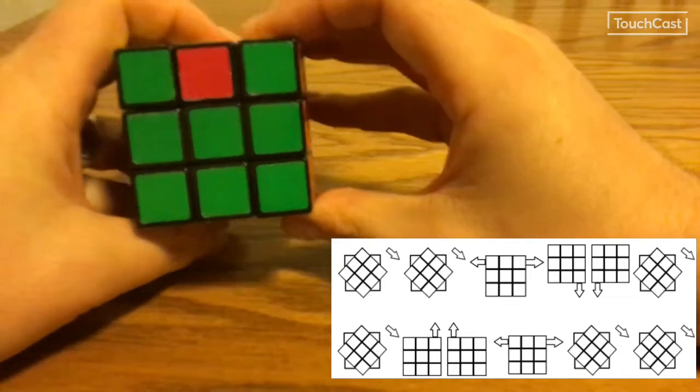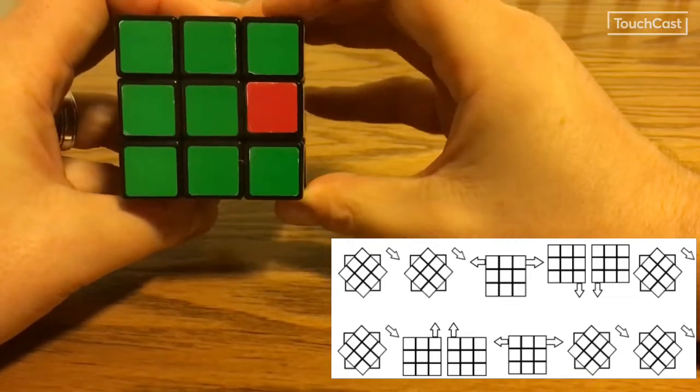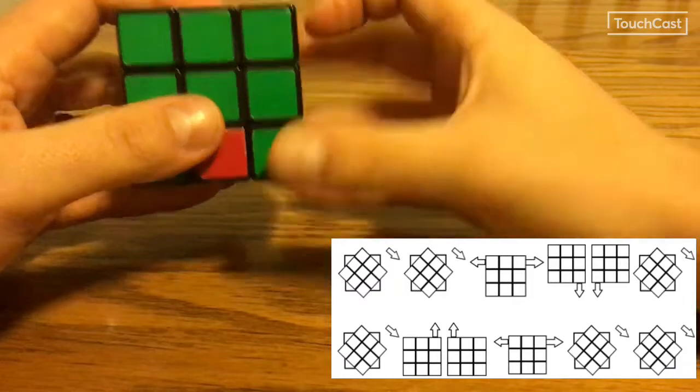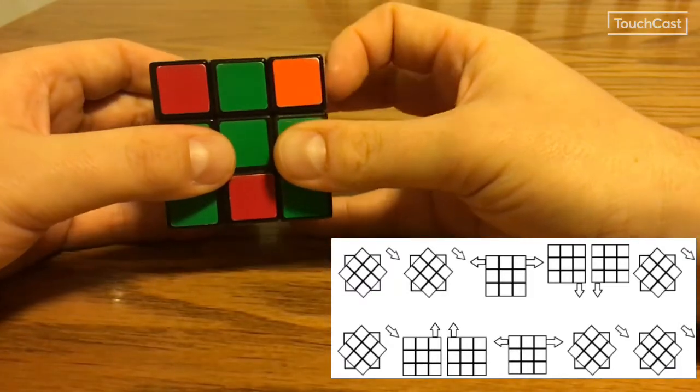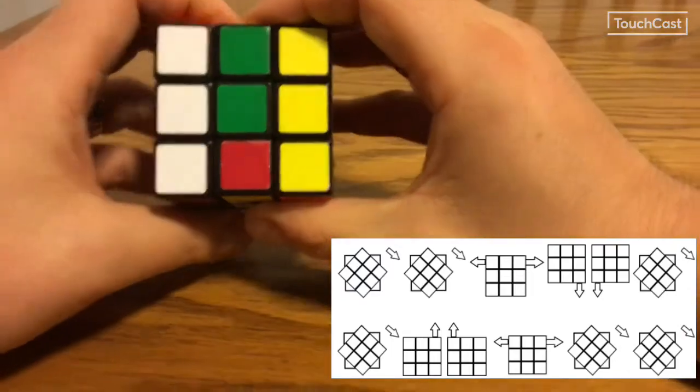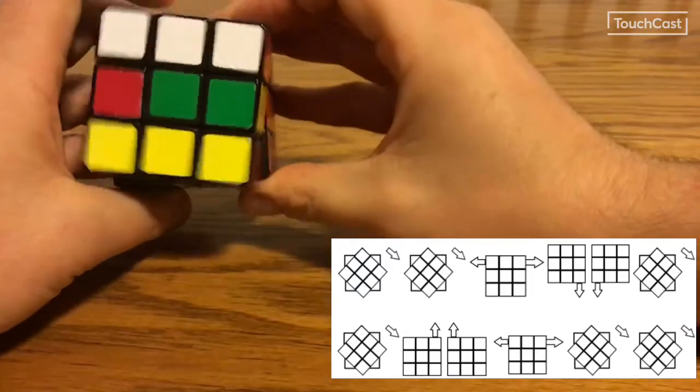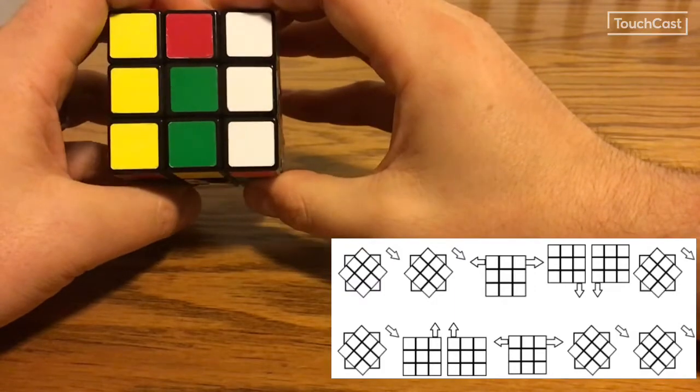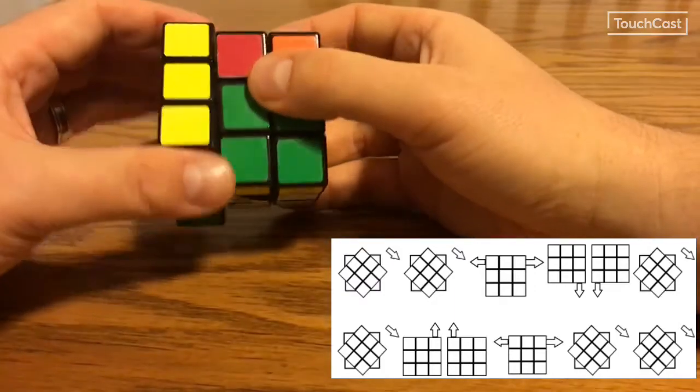I'm going to move my front face twice, my top row I said I needed to move left. I'm going to bring my right side down, my left side down, move my front face twice, my right side up, left side up.